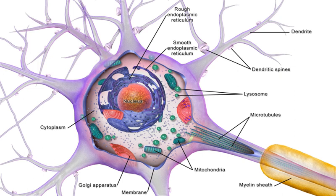The soma, plural somata or somas, also called perikaryon, plural perikarya, or neurocyton, or cell body, is the bulbous non-process portion of a neuron or other brain cell type, containing the cell nucleus.